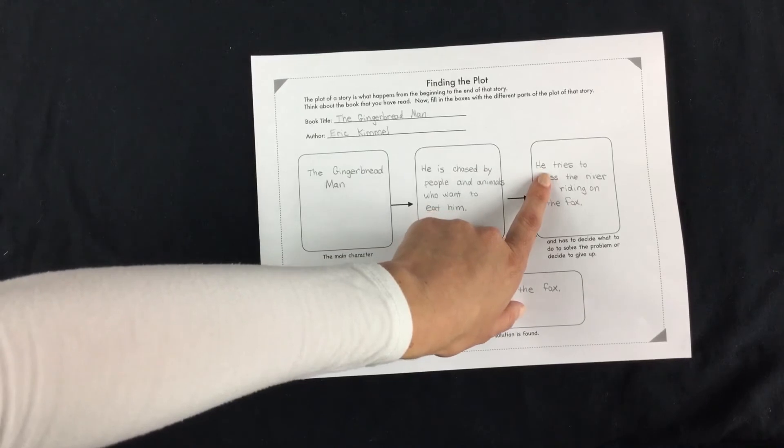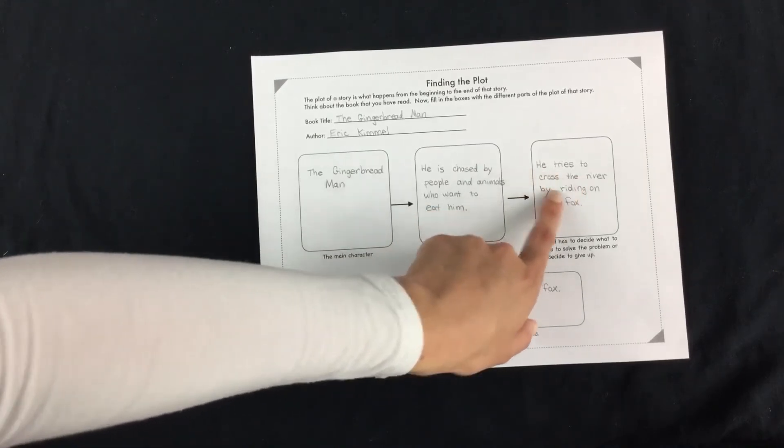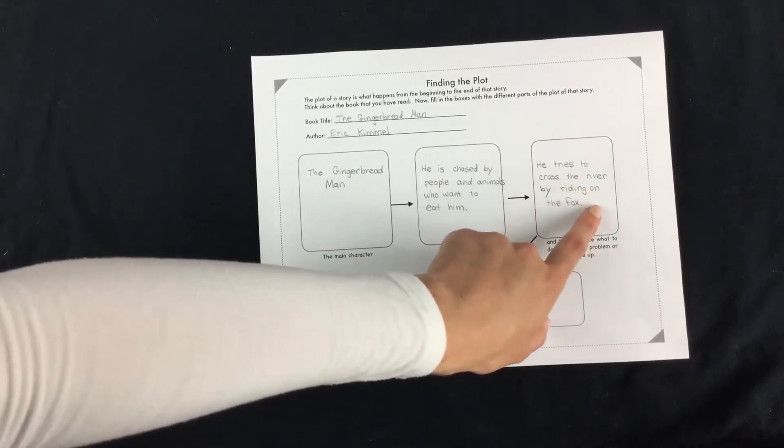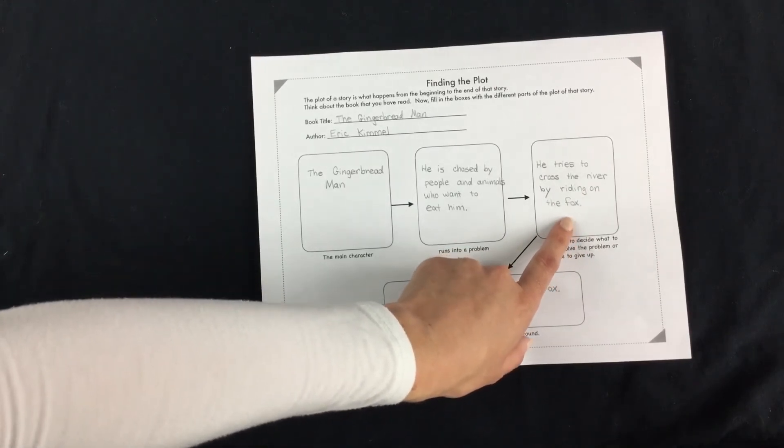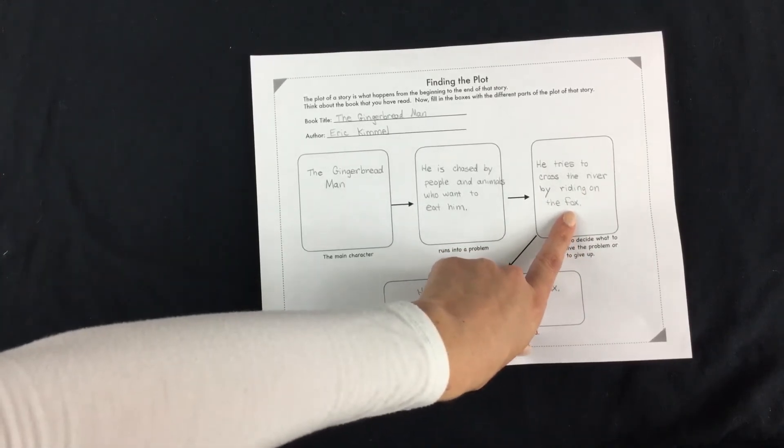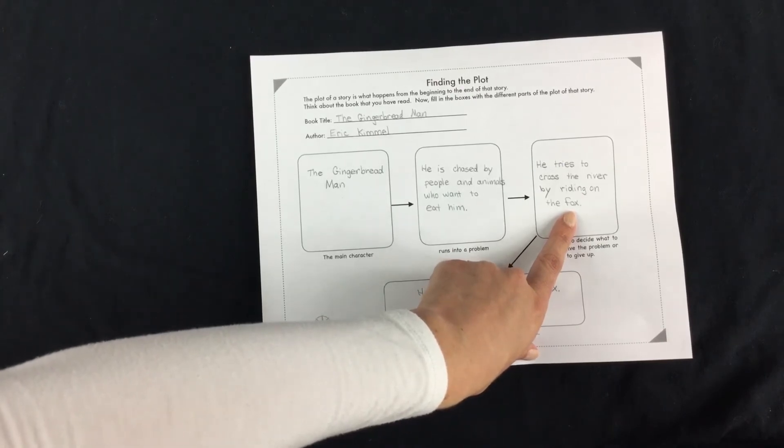So he comes up to a river and he tries to cross the river by riding on the fox. Okay, so the fox says, I will help you by swimming across the river, just ride on my back.